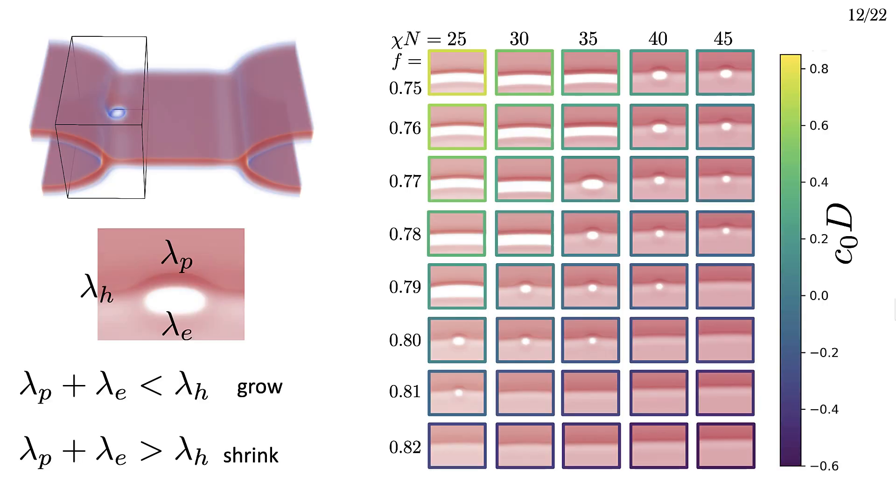We don't have that difficulty with self-consistent field theory. The way the lipid statistics are calculated and the way the system evolves makes lipid flip-flops instant in SCFT. SCFT calculations are also a lot faster and easier to change system parameters, so we can sweep through parameter space and see how the pore behaves for various lipid architectures and parameters.